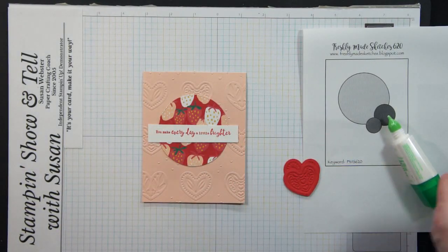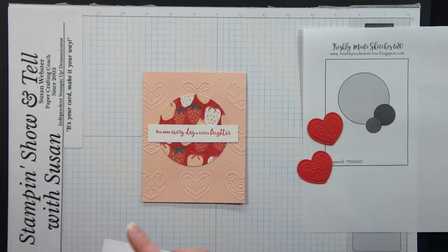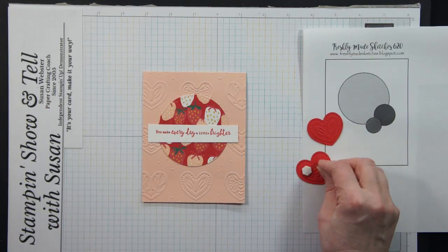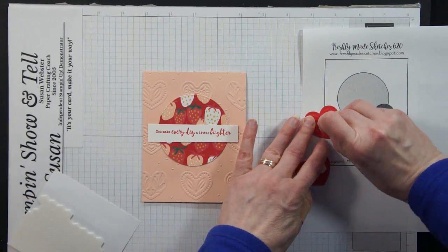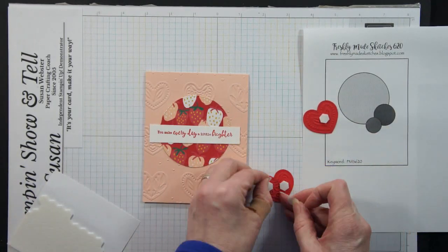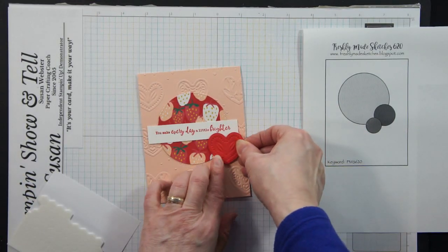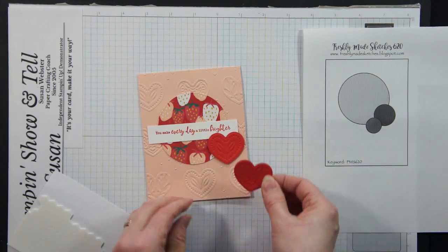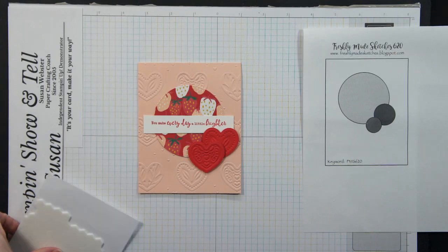Okay then let's bring in a couple of dimensionals. Put them on the back of our hearts. I think I'll do two maybe one on that one because I don't want it to get too thick when they overlap. Okay so this one's going to go down first. I'm going to put this right here at the bottom of that sentiment and then this one's going to go next to it overlapping and there we go.